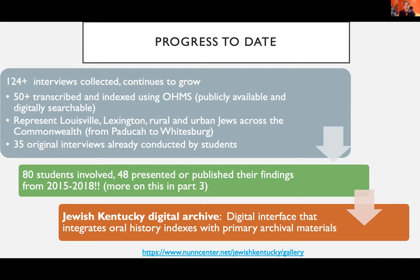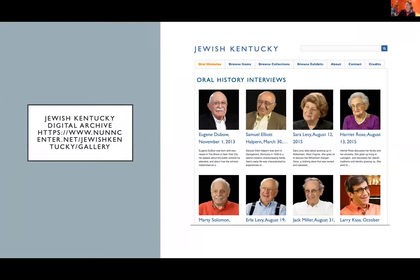Over the course of the period we've been working, about 80 students have been involved with the project, and 48 have presented or published their findings. The digital interface we're developing to access these materials is called the Jewish Kentucky Digital Archive. Here's a screenshot of what the homepage looks like — you can see only a few of the 50 that are fully accessible. Our first round of interviewees were of the older generation, and we're grateful we could do that because a few of them have unfortunately already passed away.